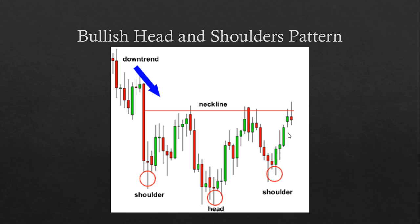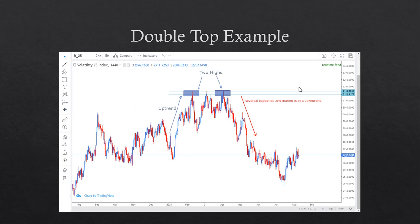The bullish head and shoulders pattern uses the same concept. We'd be coming from a downtrend, a left shoulder is created, then the head, then a right shoulder. Once the neckline is broken and candlesticks come back to retest that level, we have confirmation that we're now in an uptrend.